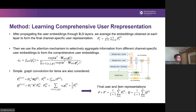After propagating the user embeddings through multiple layers with the transformed hypergraph convolution, we average the embeddings obtained at each layer to form the final channel-specific user representation. Then we use the attention mechanism to select and aggregate information from different channels to form the comprehensive user embeddings. Since we do not consider high-order relations among items, we perform simple graph convolution for items and incorporate it into MHCN. Afterward, we obtain the final user and item embeddings.